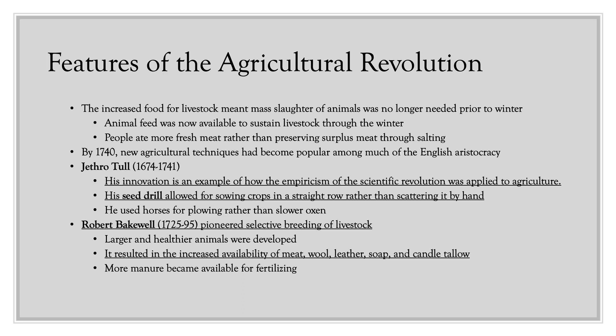Robert Bakewell pioneered techniques for selective breeding of livestock, allowing larger and healthier animals to be developed. This resulted in increased availability of meat, wool, leather, soap, and candle tallow, as well as more manure available for fertilizing. Selective breeding means deliberately breeding animals with desirable characteristics — if you want the fattest pigs, you breed the fattest male with the fattest female; if you want cows that produce lots of milk, you ensure the best milk-producing cows are bred.